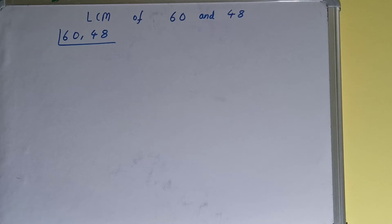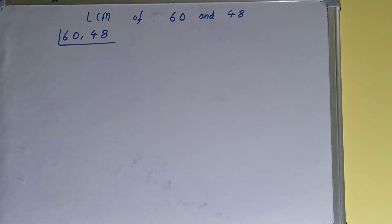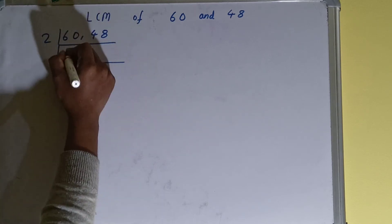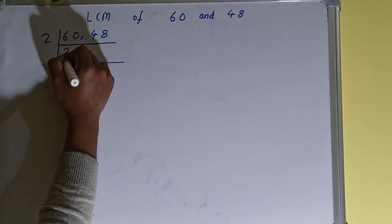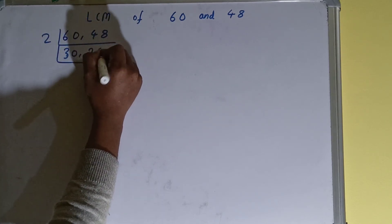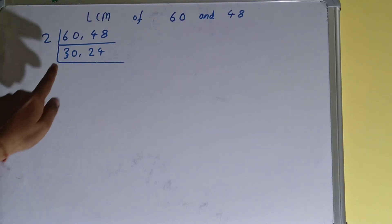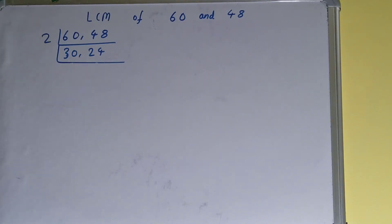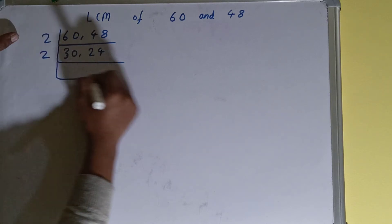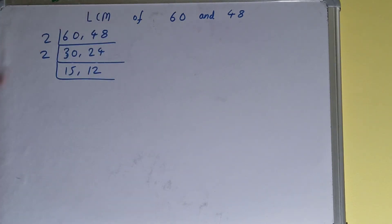Both numbers are divisible by 2, so we divide and this will become 30 and 24. Now again, both numbers are still divisible by 2, so we divide again and this will become 15 and 12.